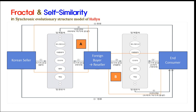In this model of the synchronic evolutionary structure of Hallyu, we find the fractal structure and self-similarity, which are characteristics of the self-organization process. In other words, the patterns of the upper left small square A (numbers one, one prime, two) and the lower right small square B (numbers three, three prime, four) resemble each other — it has self-similarity. We call this similar structure a fractal.